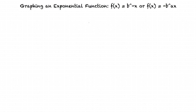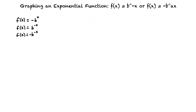What is an exponential function? An exponential function is similar to other functions we have looked at, except the variable x in the function is the power instead of the base. Functions of the form f of x equals negative b to the x, f of x equals b to the negative x, and f of x equals negative b to the negative x are all exponential functions because the variable x is in the power and not the base. Exponential functions have some positive number other than 0 and 1 as the base, since 0 to any power is 0 and 1 to any power is always 1.